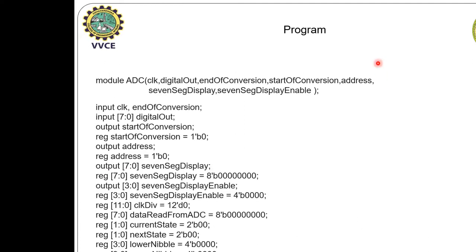Coming to the program: module ADC. The ports include clock, digital out, end of conversion, start of conversion, address, 7-segment display, and 7-segment display enable. Since in the FPGA kit we have 4 displays, to enable those displays we are using the 7-segment display enable signal. The 7-segment display is an 8-bit code which is used to enable the segments.